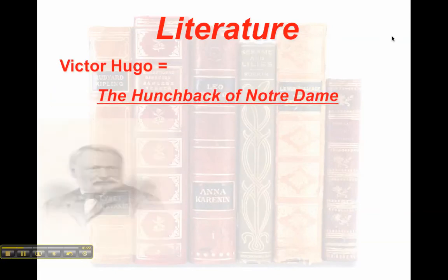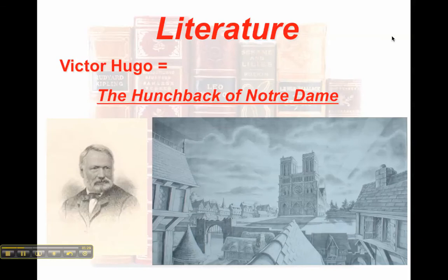Starting with Victor Hugo's The Hunchback of Notre Dame, where we have an ugly hunchback servant of a wicked archdeacon, a struggling poet, and a handsome king's soldier, all in love with a beautiful, kind gypsy named Esmeralda. All of these character stories intertwine around the Notre Dame de Paris, commonly referred to as Notre Dame Cathedral, which was a Gothic cathedral built back in the 1100s into the early 1200s.